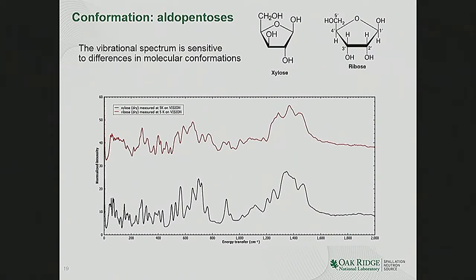Vibrational spectroscopy is sensitive to molecular structure and conformation. Xylose and ribose are two sugars — aldopentoses — with essentially the same composition. The only difference is that one OH group points in one direction relative to the ring in xylose, and in the opposite direction in ribose. You can see differences between the vibrational spectra: there are similarities but also significant differences related to the fact that this hydroxyl group points in a different direction, and the ring also has a different structure. This is a recent example from a user interested in studying the interaction of water with these sugars.